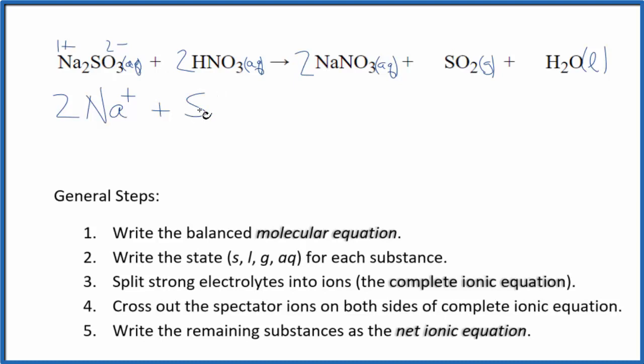Then I have the sulfite ion plus hydrogen. Group one, one plus, and then the whole nitrate ion right here is one minus, good one to remember. Two hydrogen ions and then two nitrate ions, and these are the reactants in our net ionic equation.